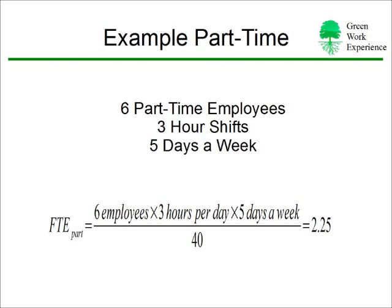The next portion of our building is part-time employees. We have six part-time employees working three-hour shifts, five days a week. This results in a number of 2.25, which can be rounded up to 3 to provide a conservative approach.